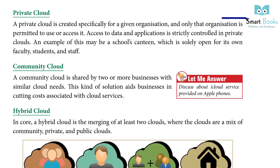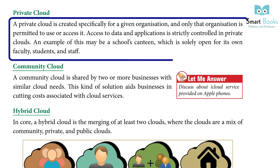Private Cloud: A private cloud is created specifically for a given organization, and only that organization is permitted to use or access it. Access to data and applications is strictly controlled in private clouds. An example of this may be a school's canteen, which is solely open for its own faculty, students, and staff.